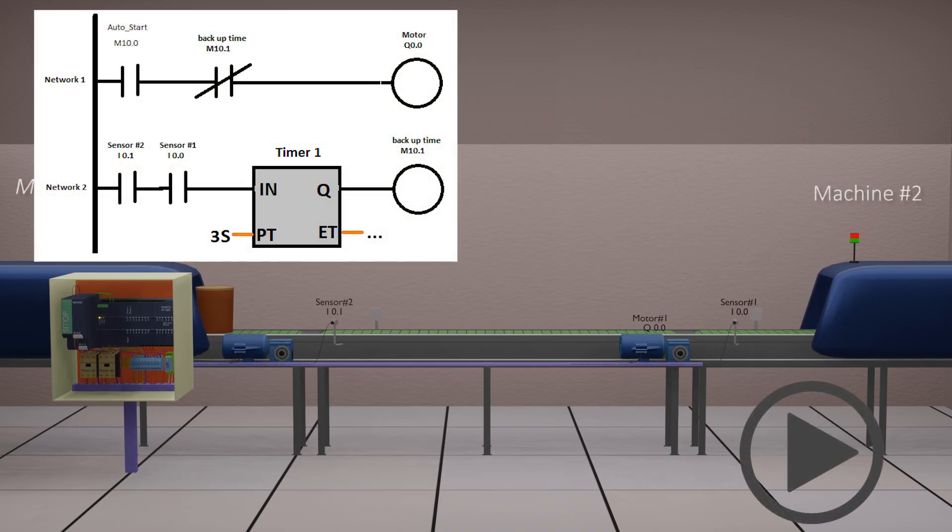As the process starts, in network 1, conveyor motor Q 0.0 turns on and the conveyor belt starts transporting the buckets.